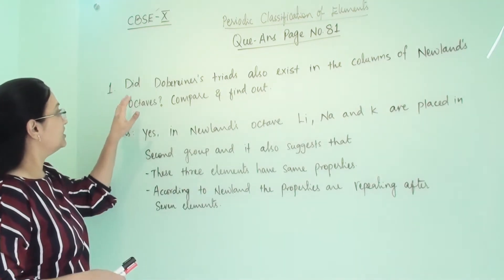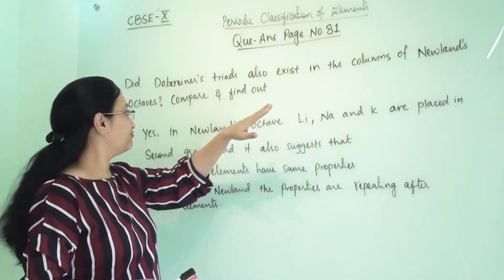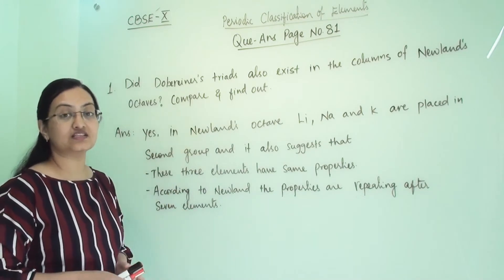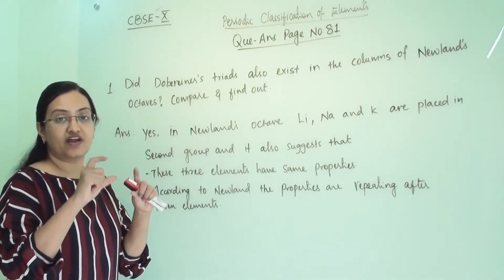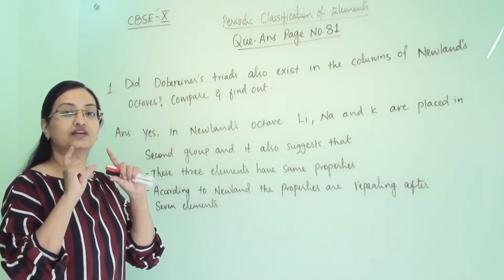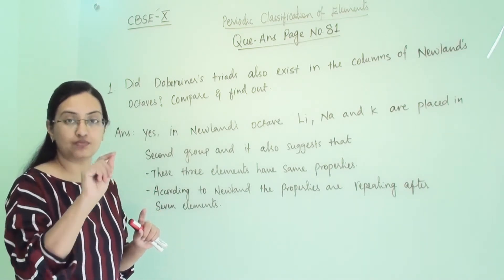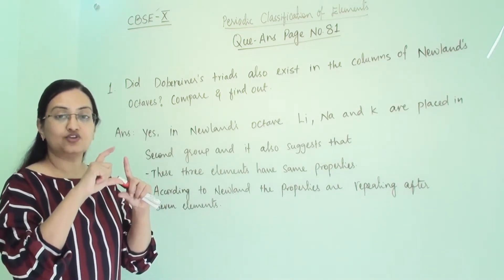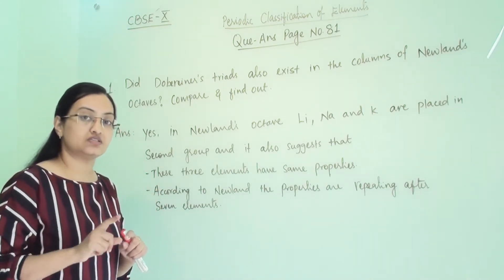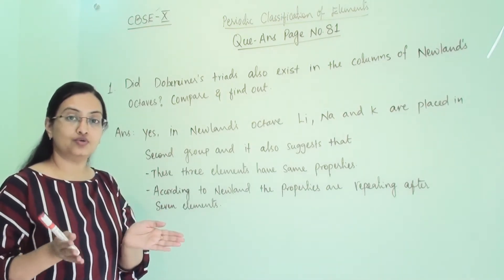The first question is: did Dobereiner's triads also exist in the columns of Newland's octave? Compare and find out. They are asking whether the three elements Dobereiner suggested can be found in the same group or same period, in the same sequence, in Newland's arrangement.